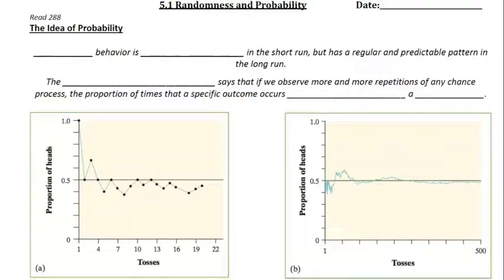5.1 notes, first notes of the chapter on randomness and probability. We'll start off with the idea of probability, and that's chance behavior is unpredictable in the short run, but has a regular and predictable pattern in the long run.